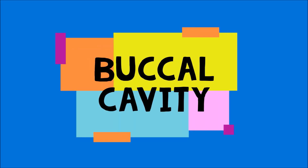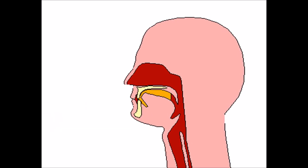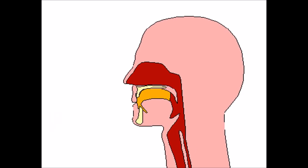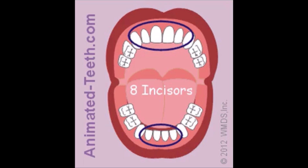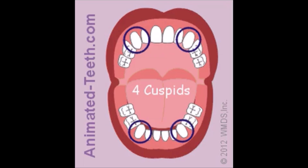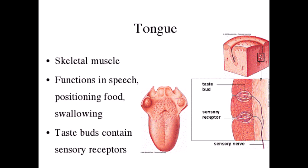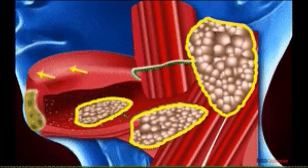The ingestion process in humans starts from the buccal cavity, and digestion of food begins in the mouth. Teeth are hard structures used to break bigger food molecules into smaller pieces. There are 16 teeth of 4 different types: incisors, canines, premolars, and molars. The tongue is a muscular organ which helps in identifying the nature of food and mixes food with saliva, which is produced by the salivary glands.